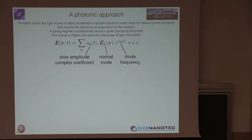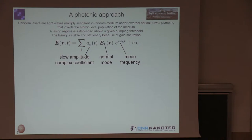Just to set the notation: the electromagnetic field can always be expressed in an expansion in terms of normal modes, and each mode comes with its own frequency that gives a fast oscillation. And then there is this slow complex amplitude coefficient whose timescale of evolution is much slower than the fluctuations around its own frequency.